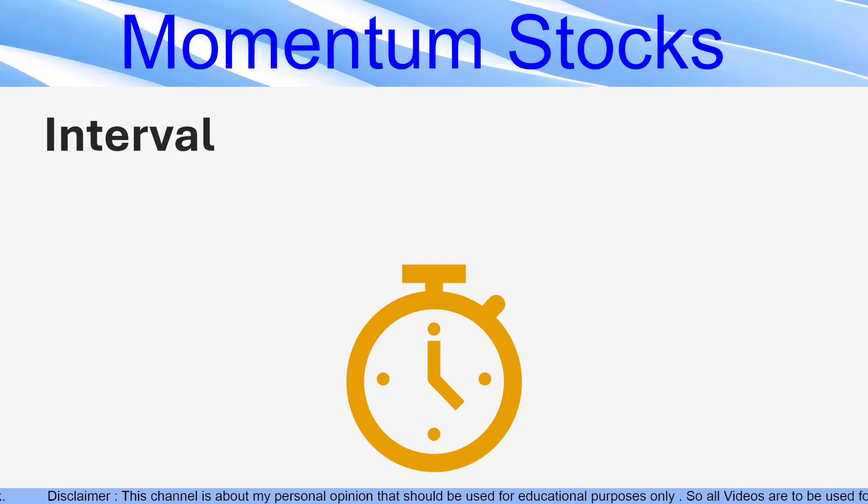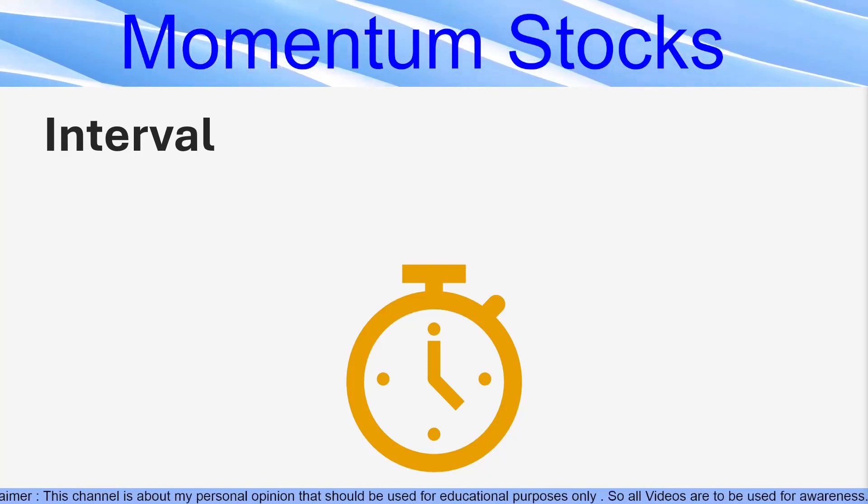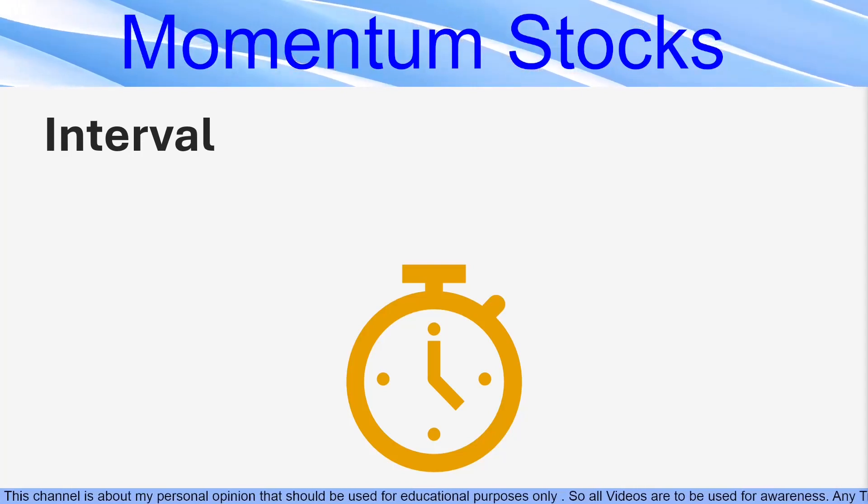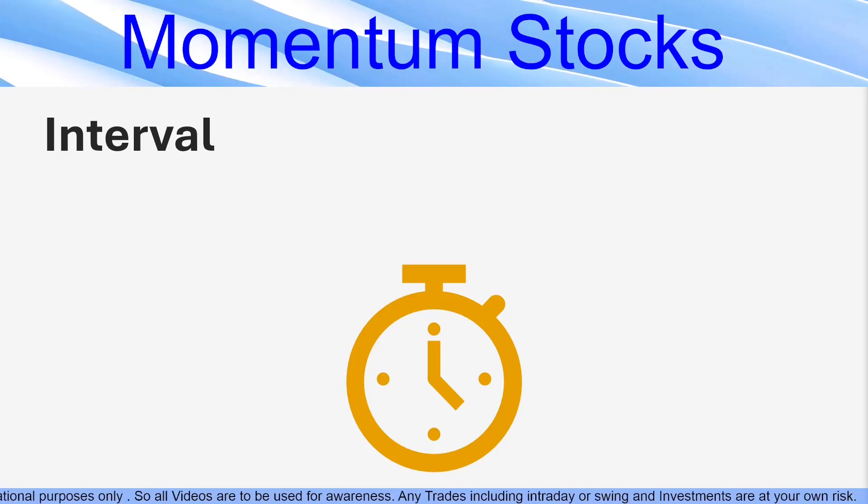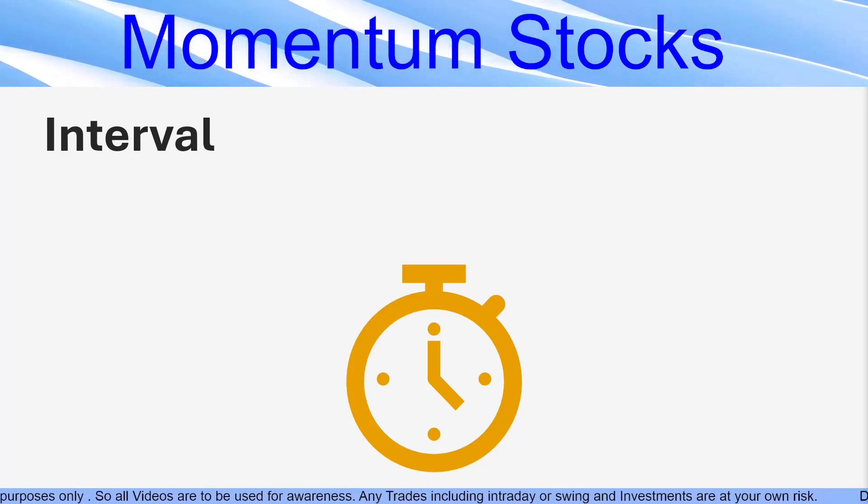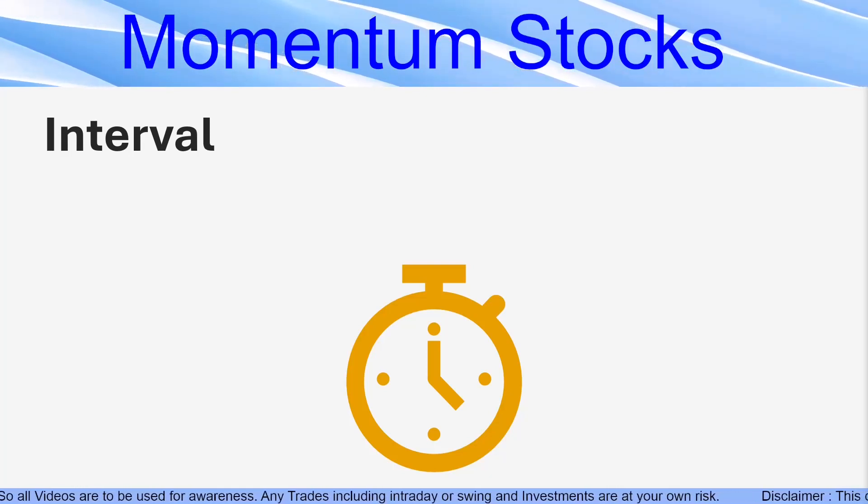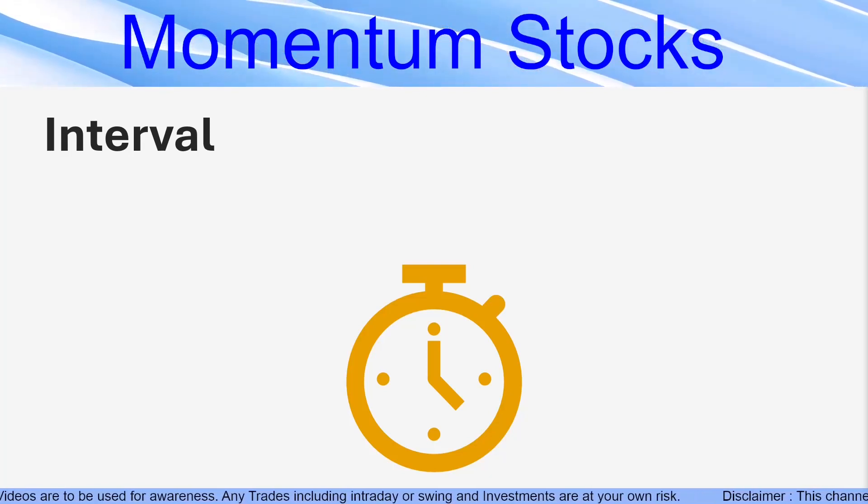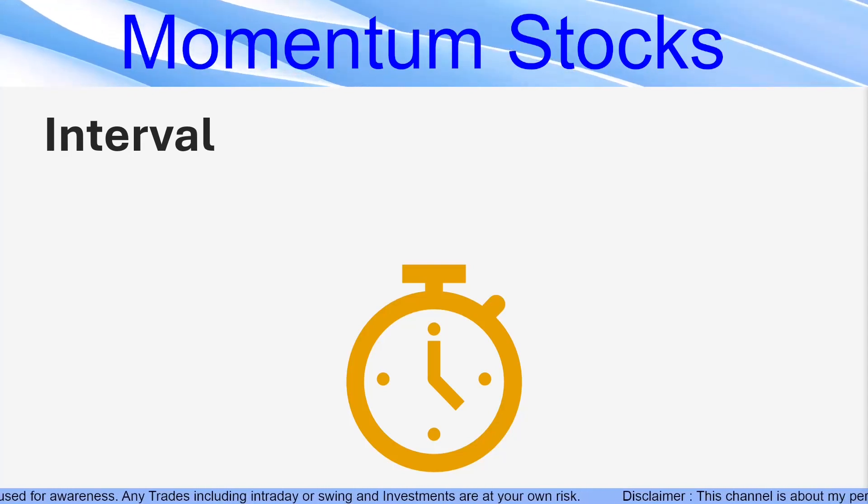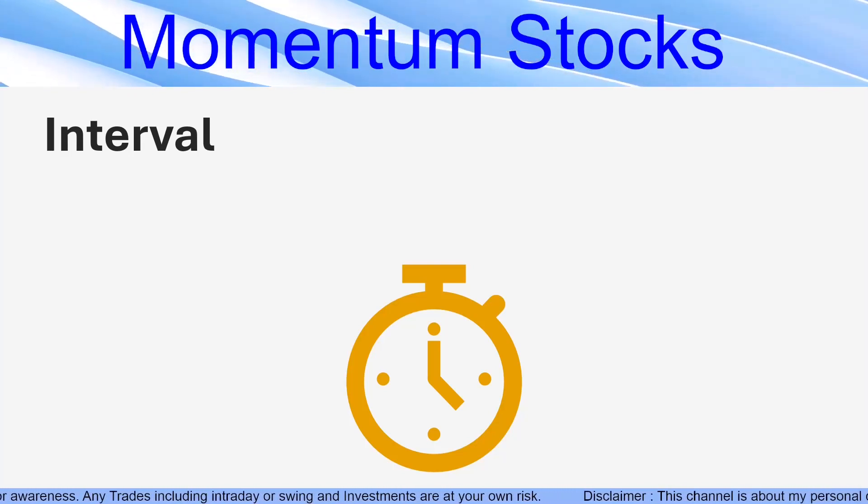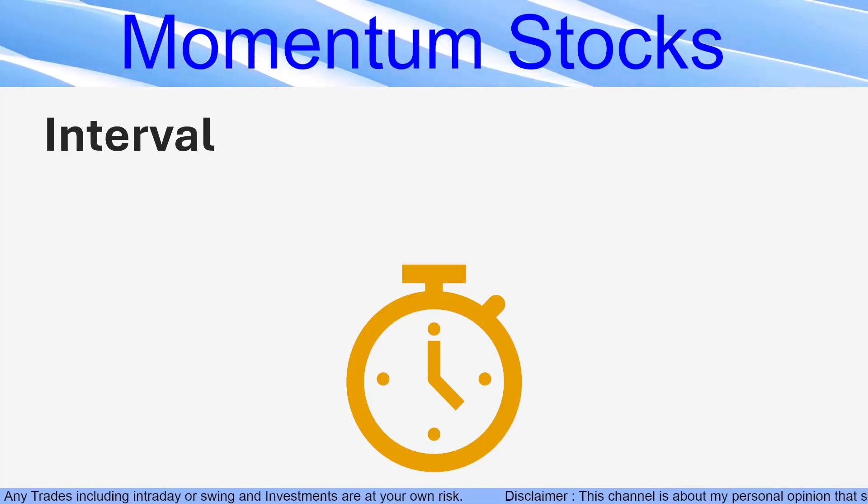What is an interval? Interval is a specific time period in which one candlestick is formed. We can say that interval is the amount of time that it takes for a particular candle to form. So we can choose the interval on our trading platform as per our needs. So let's understand how a candle is formed in a specific interval.